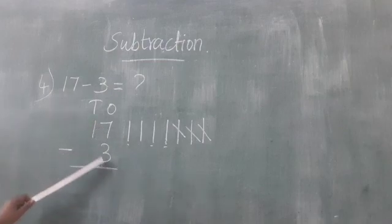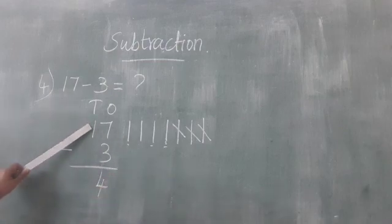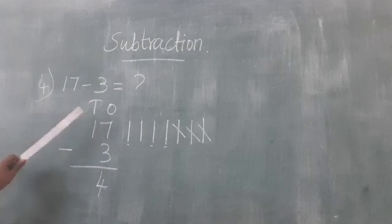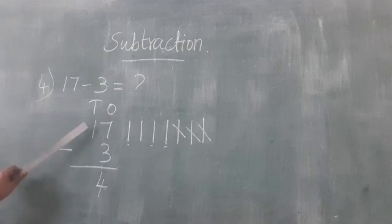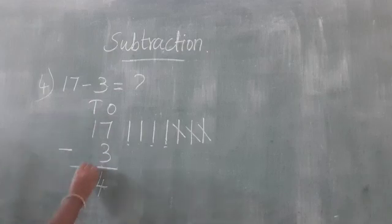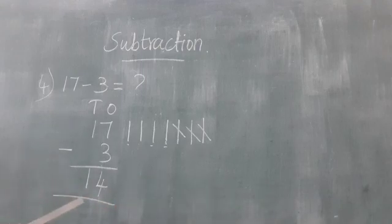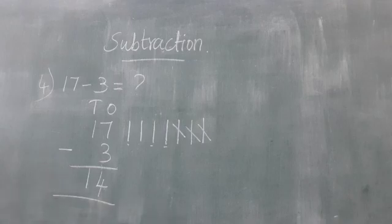So 7 minus 3. Very good, 4. So next we subtract the 10's place: 1. So write down number 1. Answer: 14. Students, do you understand today's class? Okay, thank you students.